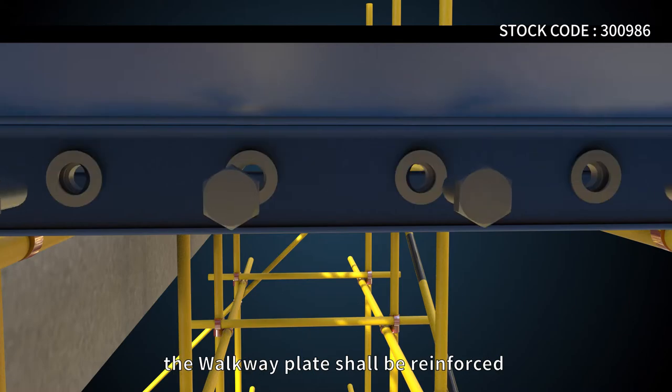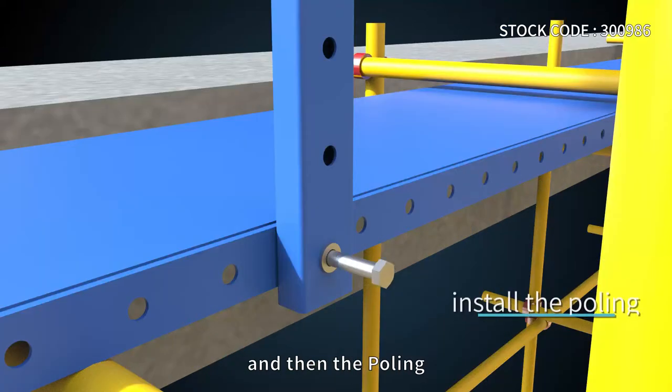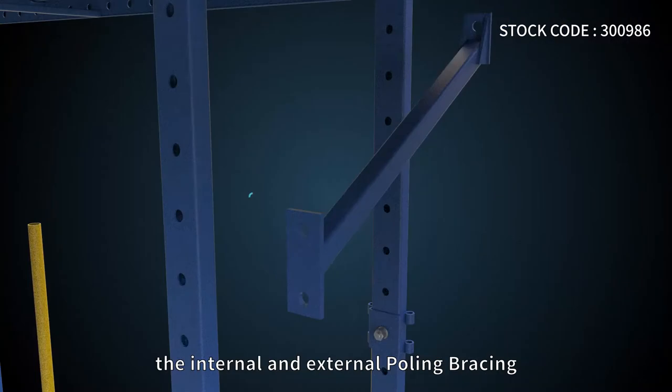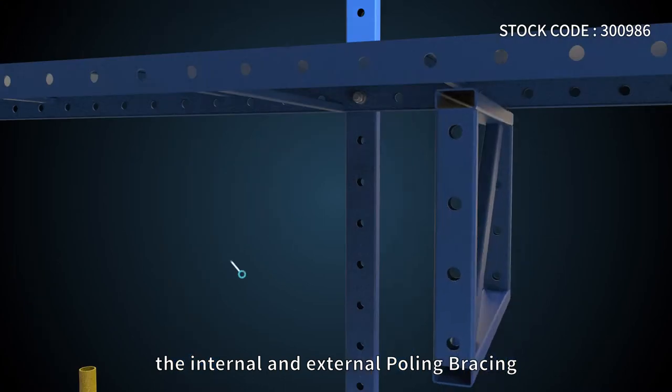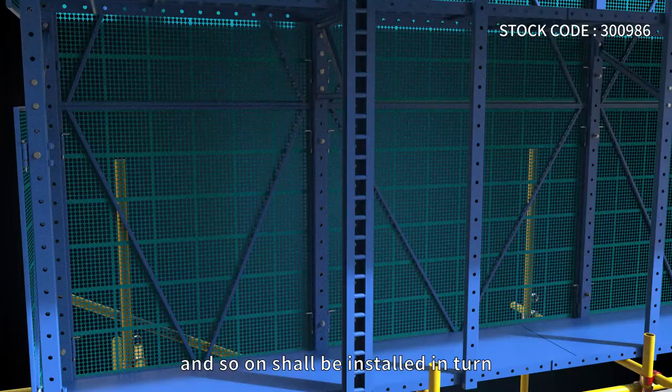the walkway plate shall be reinforced with steel pipe at intervals of 5 to 6 meters, and then the polling. The second floor walkway panel, internal and external polling bracing, rectangular truss, protective net, slideway, and so on shall be installed in turn.